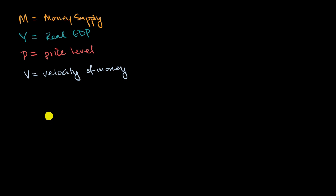And the equation of exchange that is used in the quantity theory of money relates these as following, that the money supply times the velocity of money is equal to your price level times your real GDP. And we could view this on a per year basis.